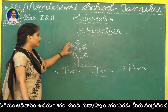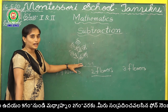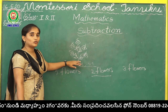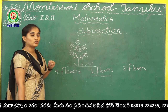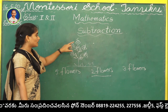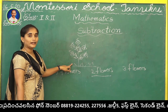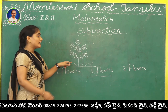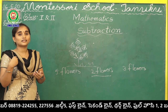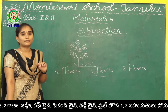Understood, children? In a garden, a plant is having 5 flowers. Out of those 5 flowers, Rani took 2 flowers. So how many are left? 1, 2, and 3. She is taking away the 2 flowers — taking away means it is called subtraction.